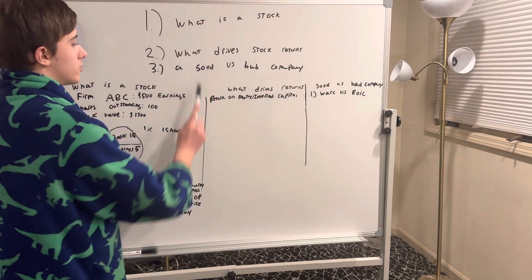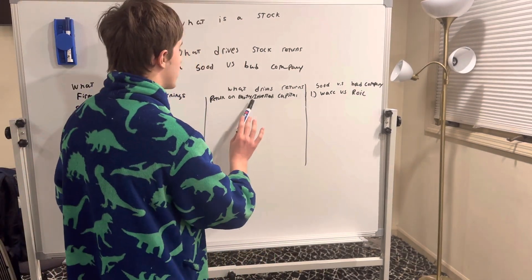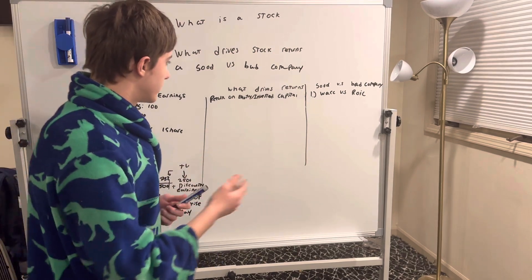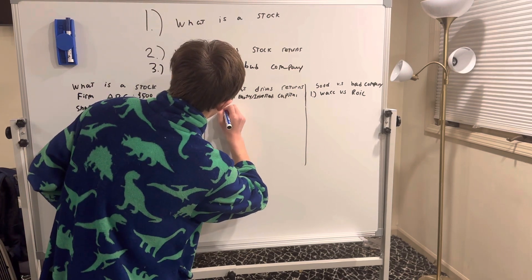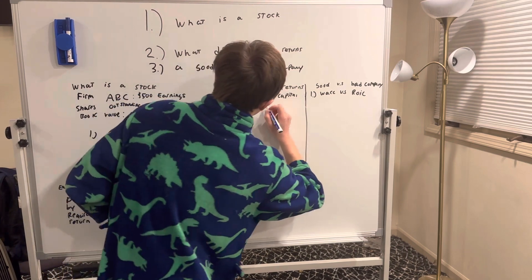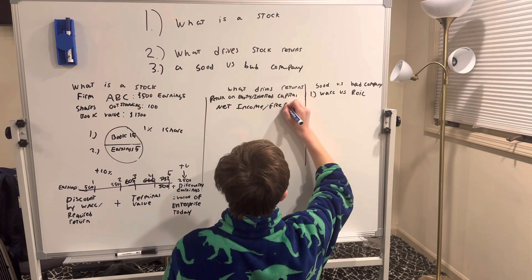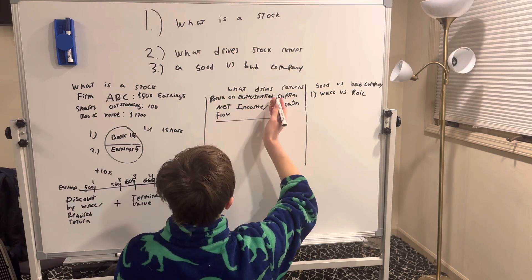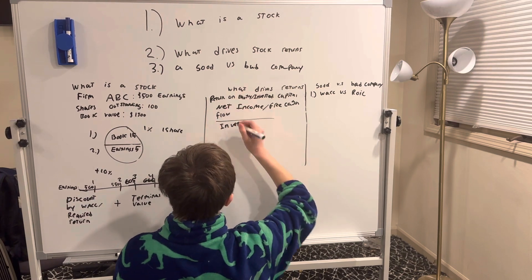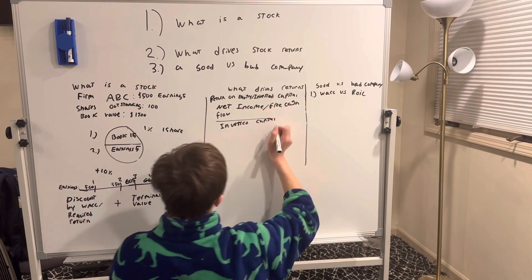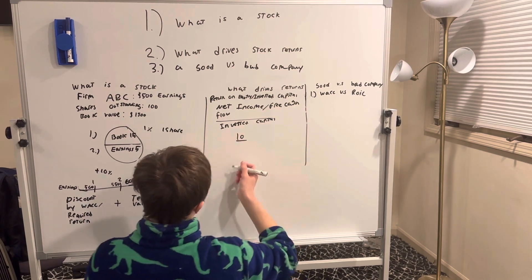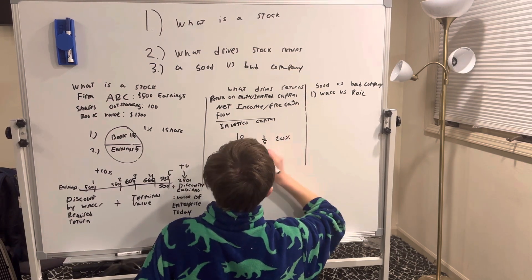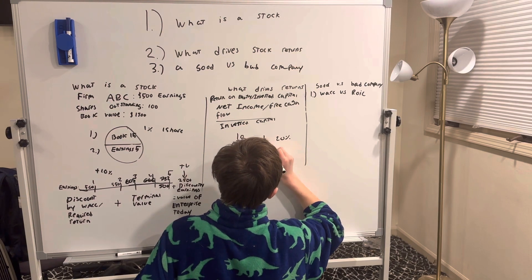Number two, what drives stock returns? What drives stock returns mainly is return on equity and return on invested capital. Return on equity and return on invested capital is net income or you can use free cash flow, divided by invested capital or equity. So for example, if a firm makes $10 a year, a lemonade stand makes $10 a year, and it took $50 to build a lemonade stand, well then that's one-fifth, or 20% on invested capital.